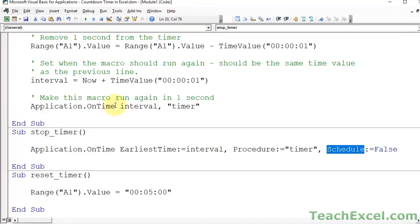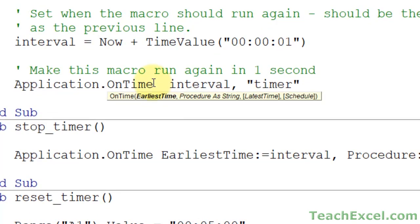Up here I did not use the argument name. So if I go to on time and hit space, you'll see all the arguments that you can use. Earliest time, procedure, latest time, and schedule. So if you just use them in order, especially if it's just a couple of the arguments at the start, then you don't need to put the argument name. There's really not much point in doing it.